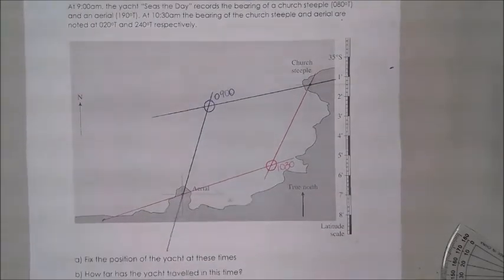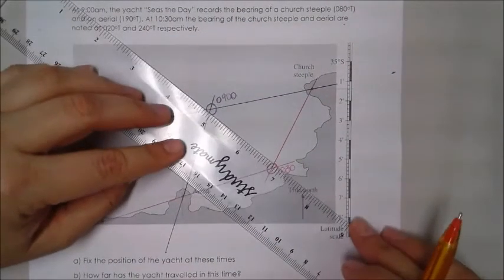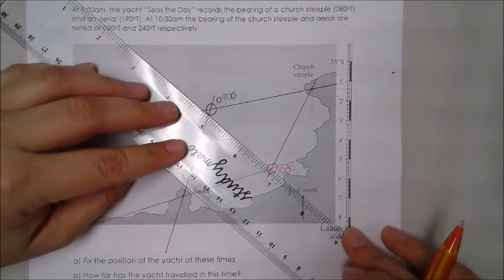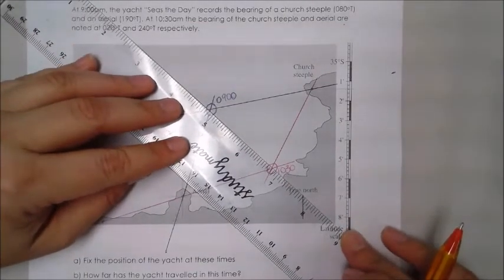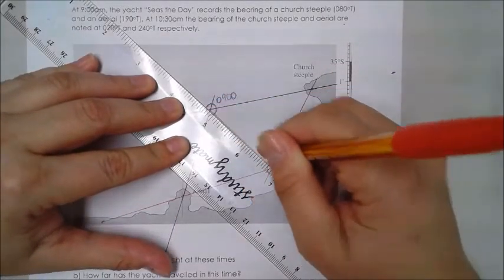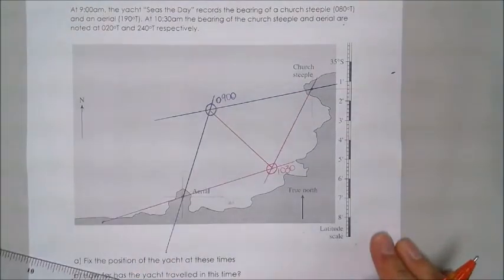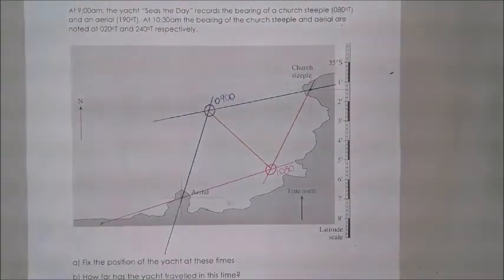Part B says, how far has the yacht traveled in this time? This one is fairly simple to do. The first thing we want to do is find the distance between the two points. We do this by drawing a line between them. If you're using pencil, I recommend that this line you highlight so you know that's your distance.